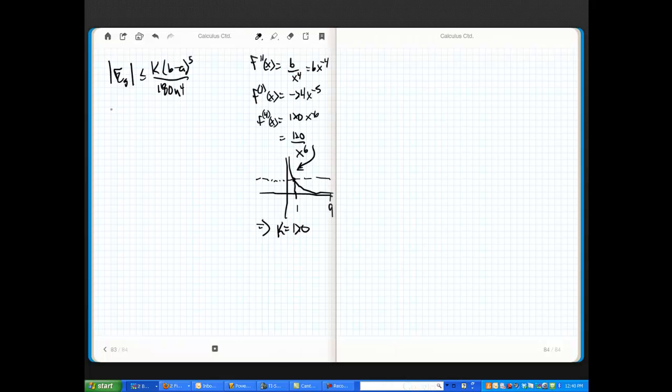So, let's label all our stuff again. A equals one, B equals nine, N equals eight, and K equals 120. And let's look at the error, all right? Let's see, error for the Simpsons. Whoa, sorry about that. You guys, my stylist died. Is less than or equal to 120 times 9 minus 1 to the fifth divided by 180 times N, which is 8. So, this is 8 to the fourth, right?